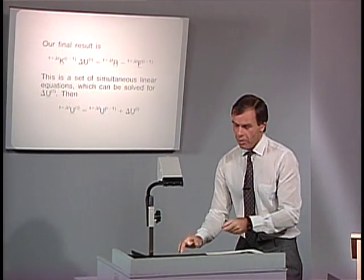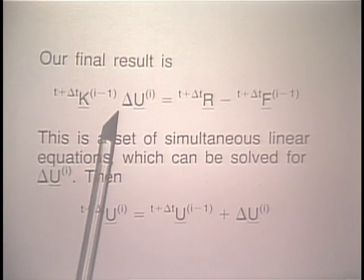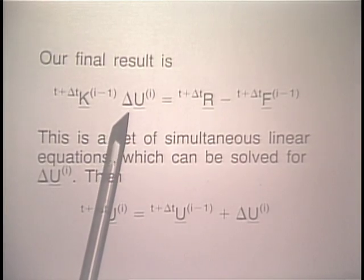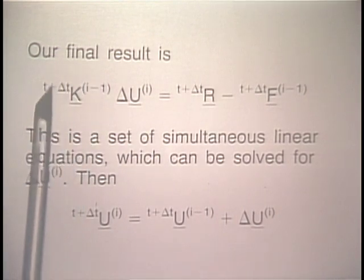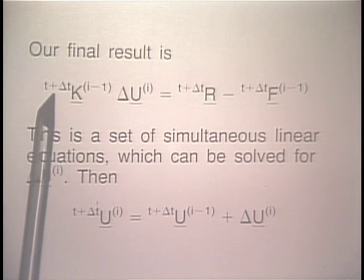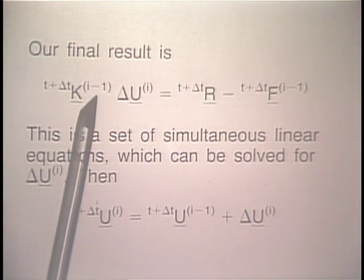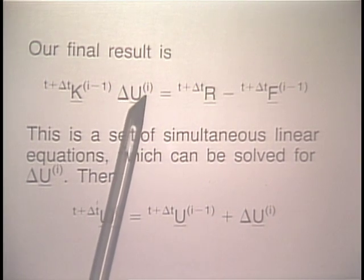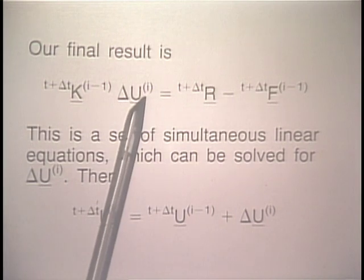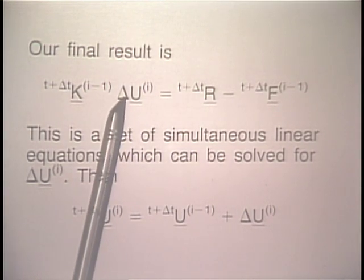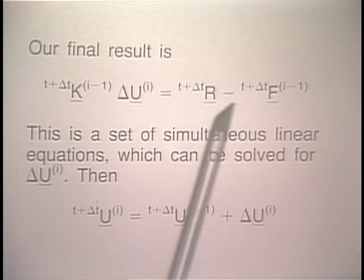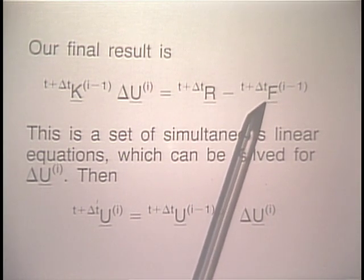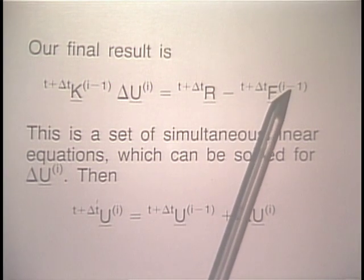The final result is given on this view graph. We substitute all information into the Taylor series expansion around t+delta_t u_{i-1} and get directly this equation: the tangent stiffness matrix corresponding to time t+delta_t and iteration i-1, times delta u_i corresponding to iteration i, equals the externally applied nodal point forces minus the nodal point force vector corresponding to internal element stresses at time t+delta_t at the end of iteration i-1.